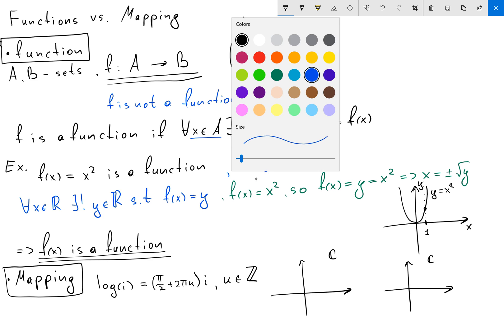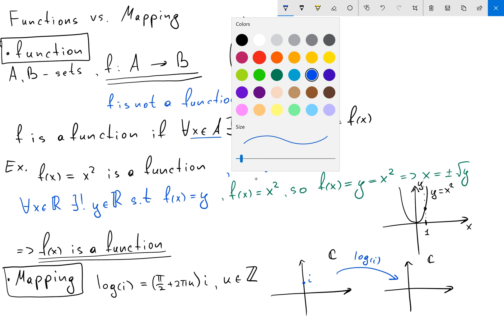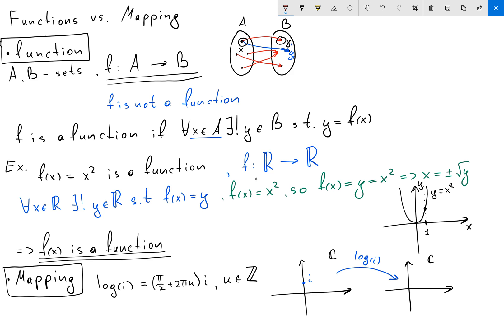Where I'm getting one element i in my first plane, and then when I'm gonna map this element to another complex plane by using the log function, I'm gonna get a bunch of elements which is gonna have this form.